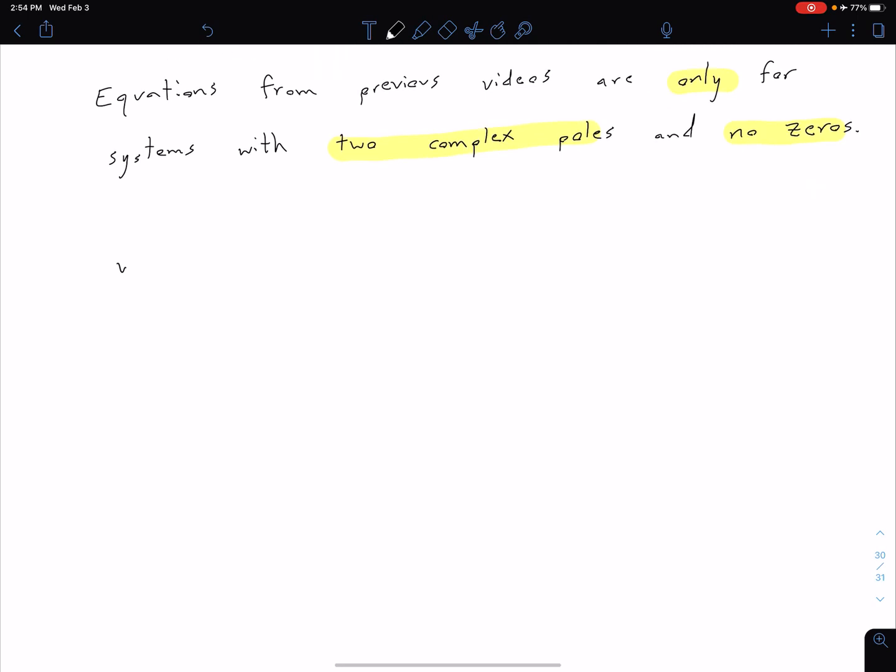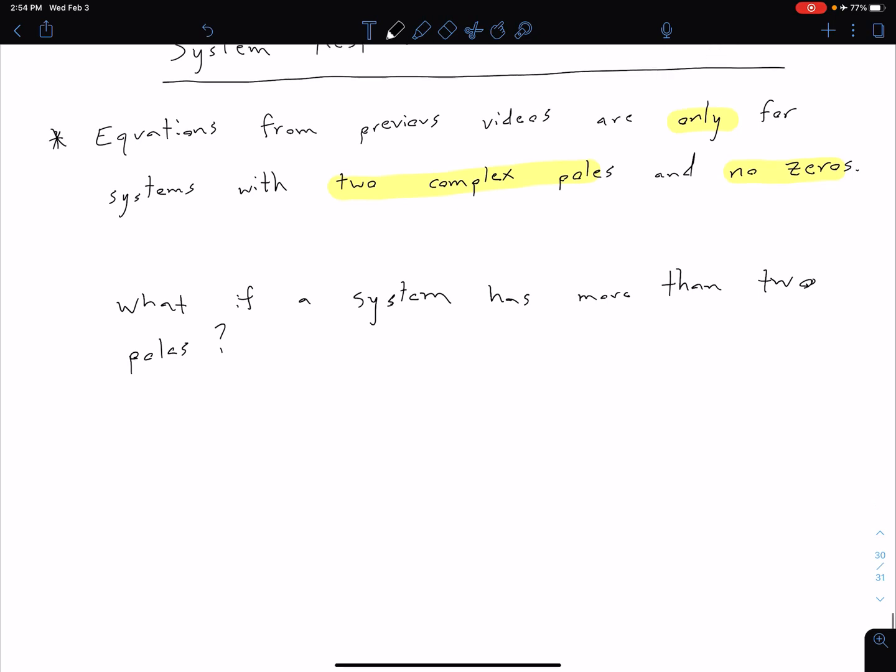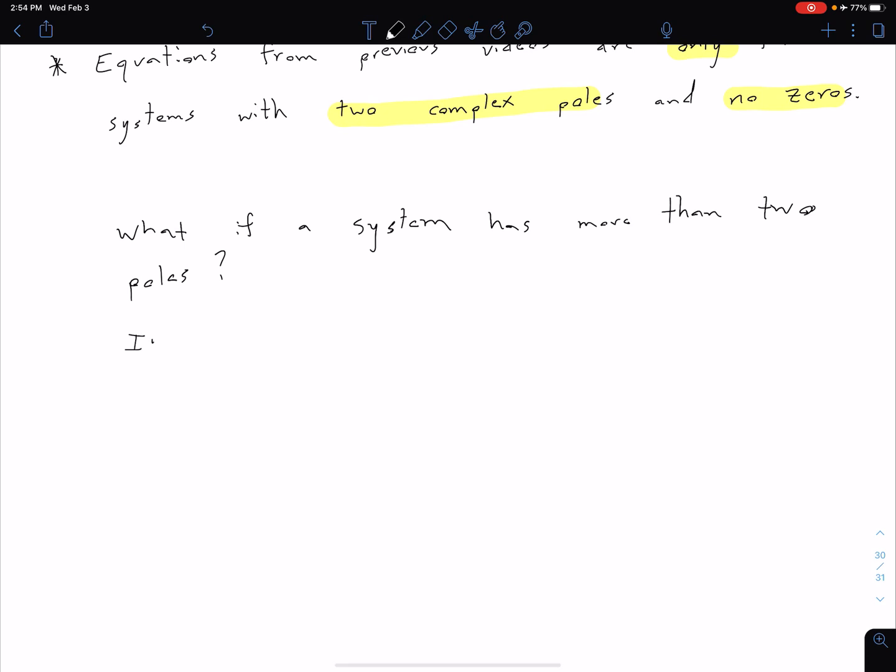So we're going to say what if our system has more than two poles, and if we're talking about underdamped response then they're going to be complex poles. At the moment we'd say this doesn't match our criteria from our previous video, so we can't use those equations, but what we're going to see is in certain cases we can approximate it such that the equations are good enough.